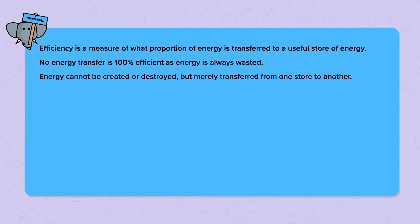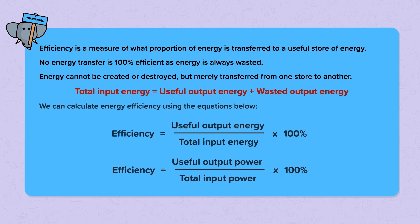Energy cannot be created or destroyed but merely transferred from one store to another. Total input energy is equal to useful output energy plus wasted output energy. We can calculate energy efficiency using the equations below: efficiency is equal to useful output energy divided by total input energy times 100%, or efficiency is equal to useful output power divided by total input power times 100%.